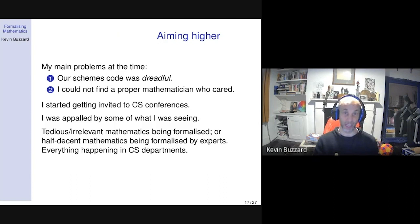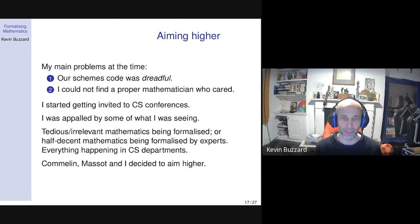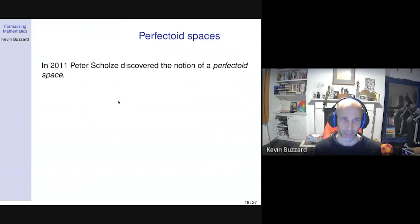I started going to computer science conferences, and I realized these people were just doing the wrong thing — all the mathematics being formalized was being done in computer science departments. Computer scientists have no idea what fashionable mathematics is or what kind of mathematics gets mathematicians excited. Nothing I was seeing was making me, as a proper mathematician, remotely excited. The only thing I thought was interesting was my work on schemes. Comilin and Massot, who'd arrived on the Lean chat, and I decided to aim higher.